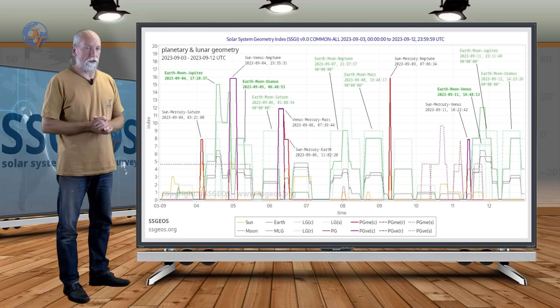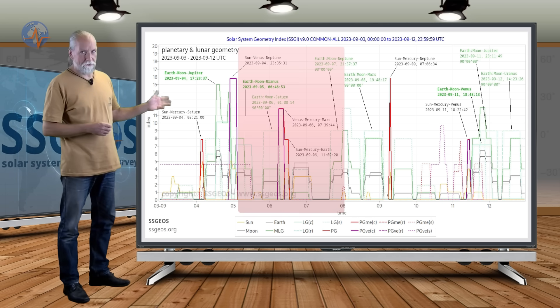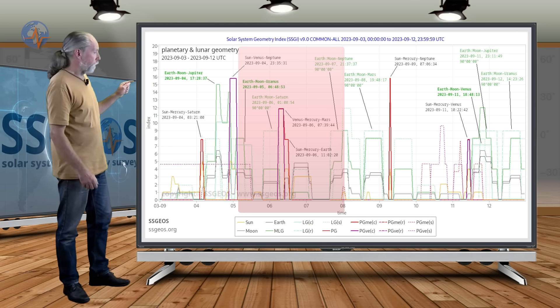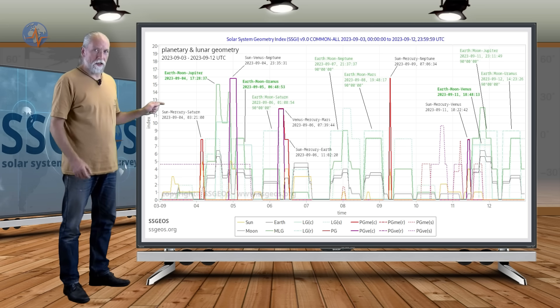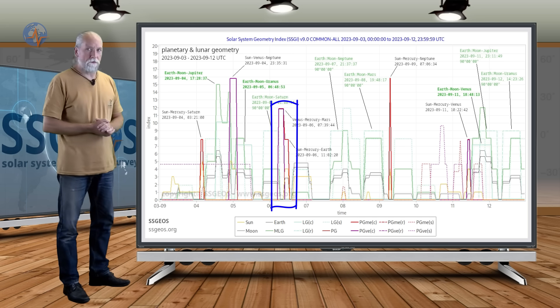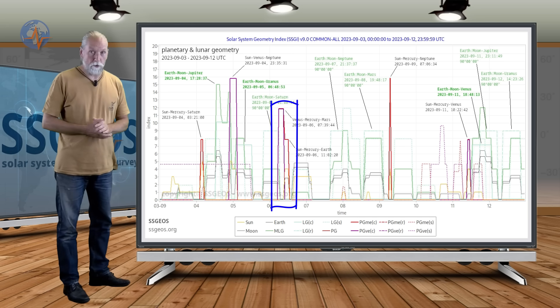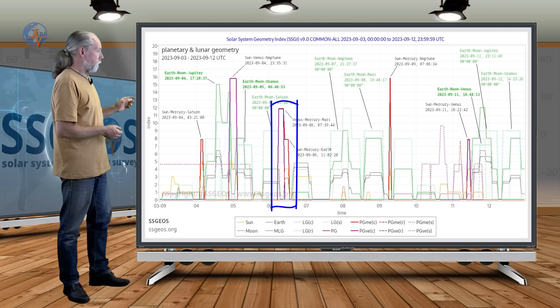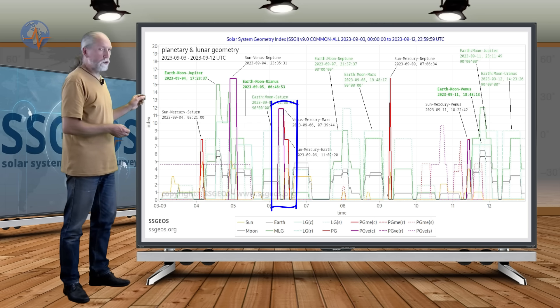This is because on the 6th we also have two planetary conjunctions, and they also involve Mercury and Venus—purple and red. We have Venus-Mercury-Mars, and that is early on the 6th.